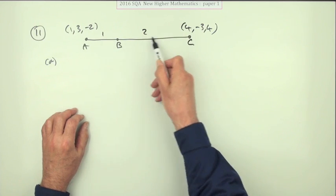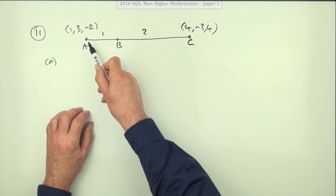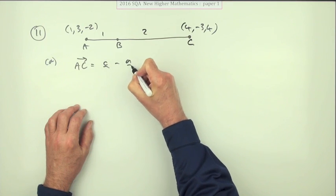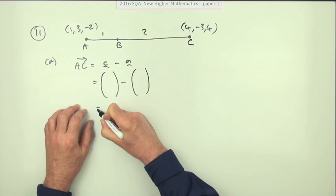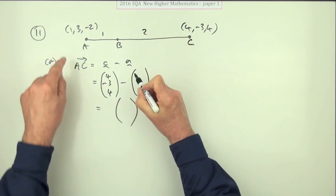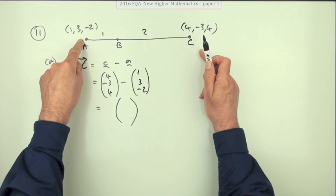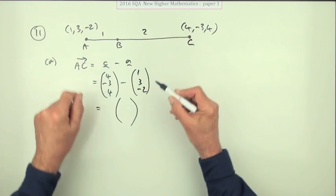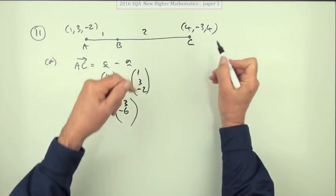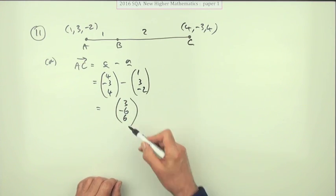B is one-third of the way along the line AC. You start at A and go a third of AC. So find AC—you need it in part B anyway. AC will be C minus A. That is (4, -3, 4) - (1, 3, -2). To get from A to C: you go from 1 to 4, that's 3 forward; from 3 to -3, that's 6 backward; from -2 to 4, that's 6 forward. So AC equals (3, -6, 6).